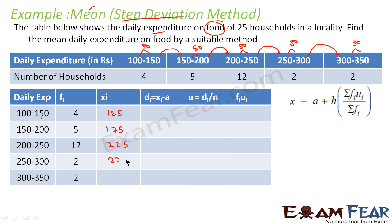In this case (250 + 300) / 2, that is 275. And in this case (300 + 350) / 2, that is 325. These are the values of xi. Now I have to assume one mean, so let me assume this guy is the mean.